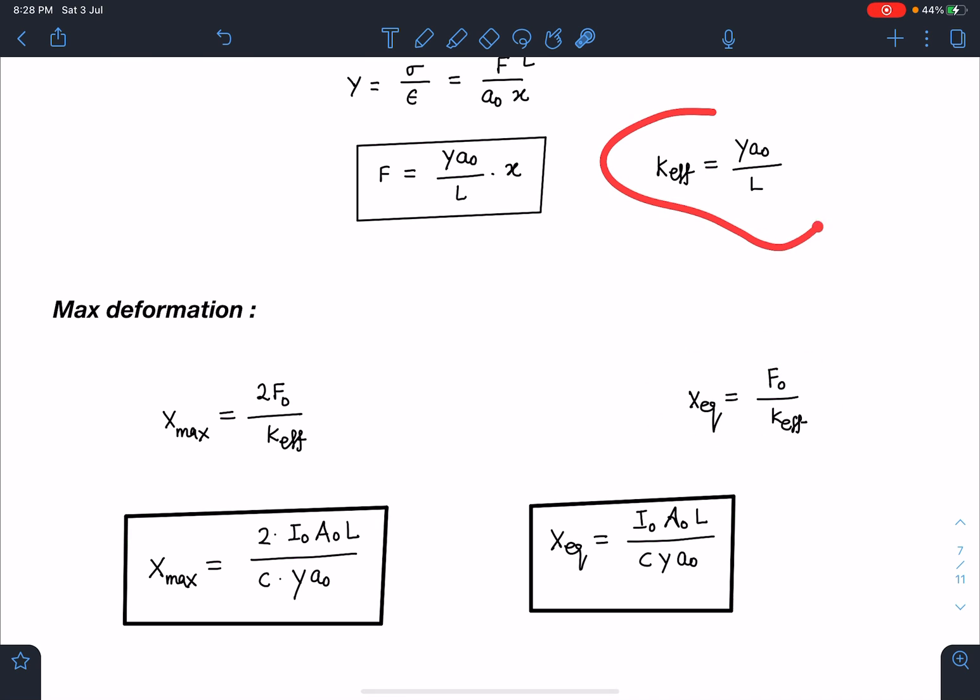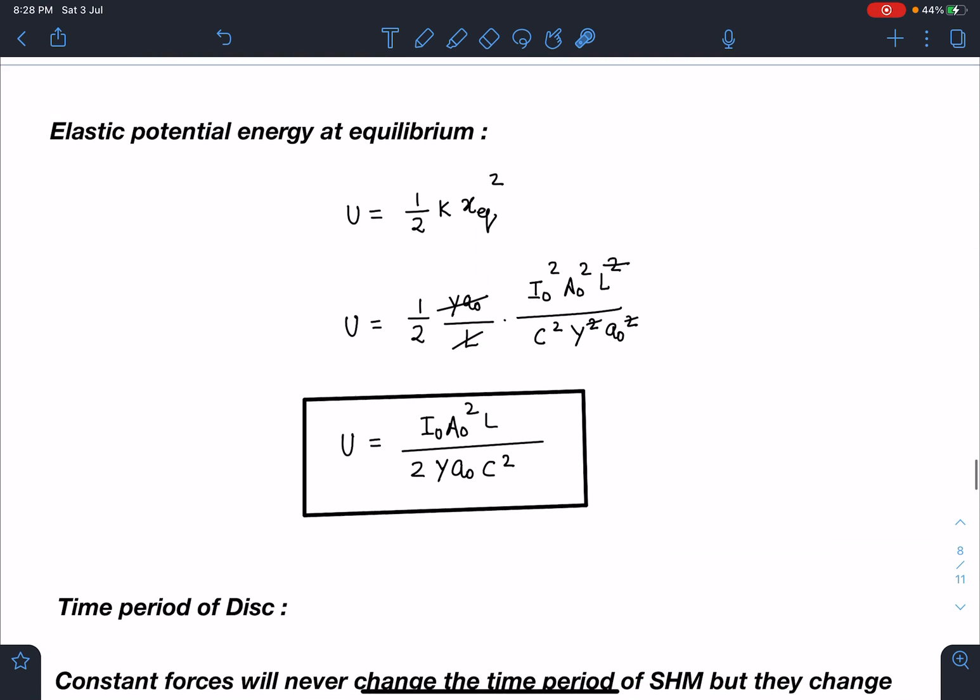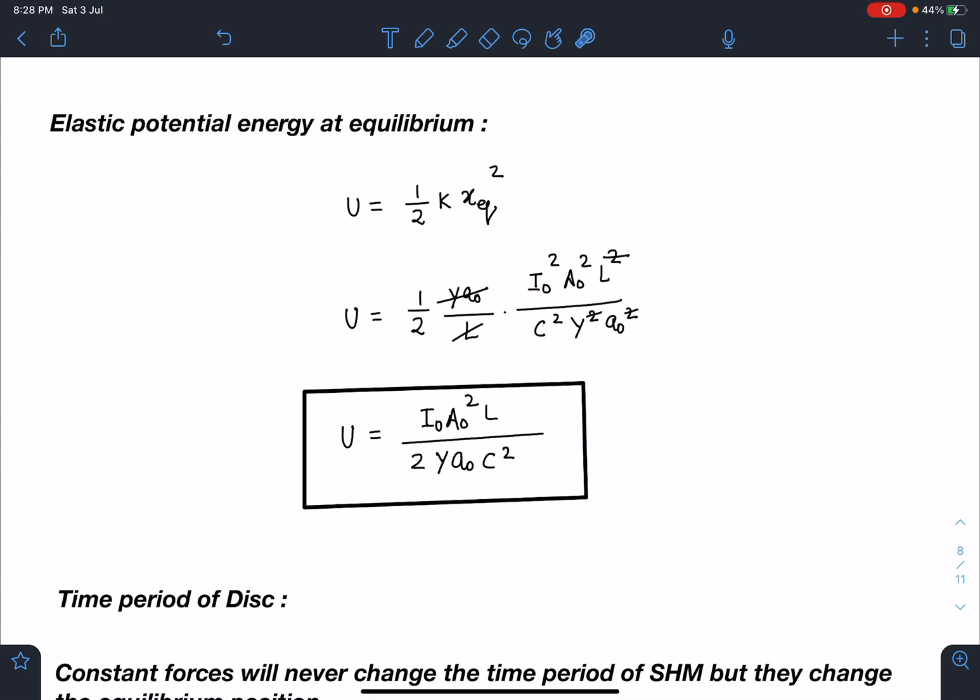So x_max is 2F₀/K_effective and x_equilibrium is F₀/K_effective. If I substitute the value of K_effective and F₀ value is I·A/c, I'm going to get x_max as 2I₀A₀L/(cYA₀) and x_equilibrium is half of it, I₀A₀L/(cYA₀).